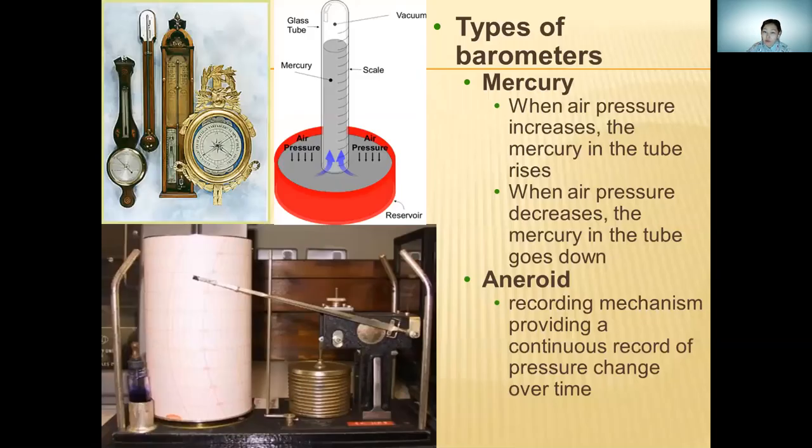Types of barometers: Mercury. When air pressure increases, the mercury in the tube rises. When air pressure decreases, the mercury in the tube goes down.